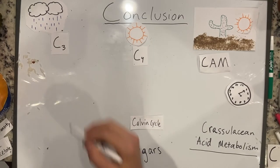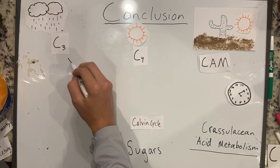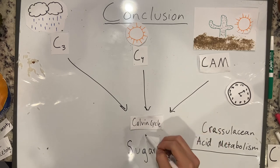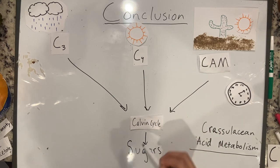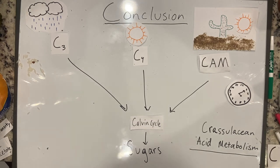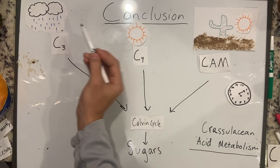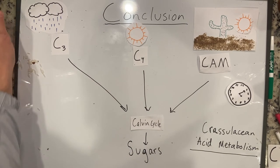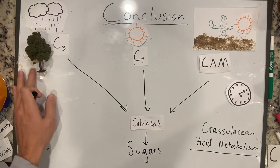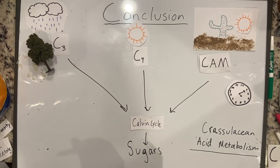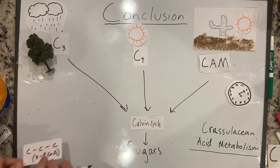In conclusion, C3, C4, and CAM photosynthesis all use the Calvin cycle to make sugars from CO2. These pathways for fixing CO2 have their own advantages and disadvantages that make plants able to thrive in different environments. C3 organisms such as wheat, rice, and trees work well in cool, wet environments. C3 photosynthesis gets its name from the three-carbon molecule, 3-phosphoglyceric acid.